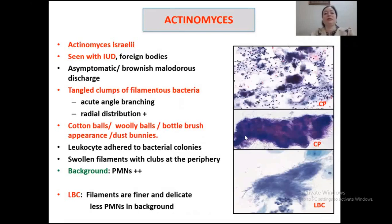The next infection is actinomycosis. Actinomycosis of the female genital tract is rare, as Actinomyces israelii usually causes superficial colonization rather than invasive infection. It is a normal flora in the mouth and bowel and may spread to the vagina by orogenital contacts or with multiple sexual partners. The risk of infection increases with prolonged use of IUDs, especially copper IUDs, chronic endometritis, and forgotten foreign bodies like pessaries and tampons.